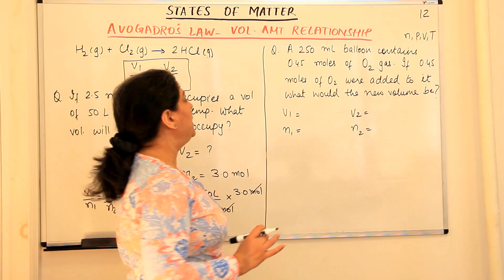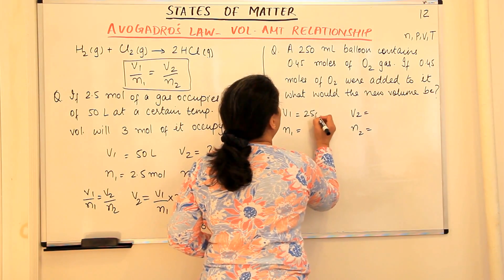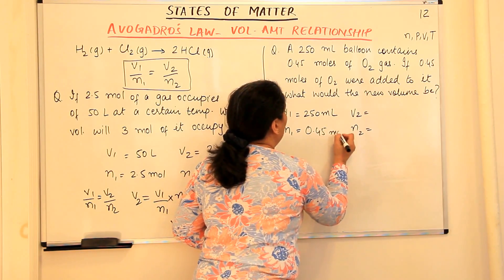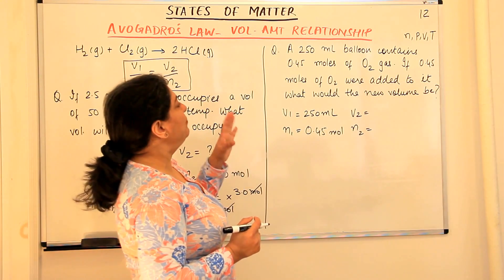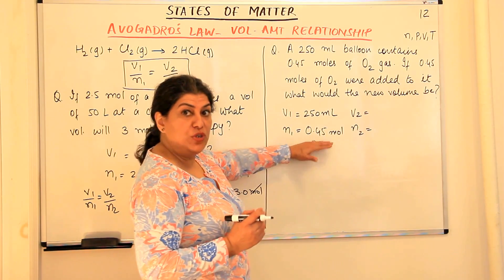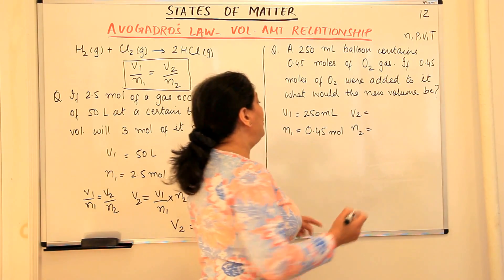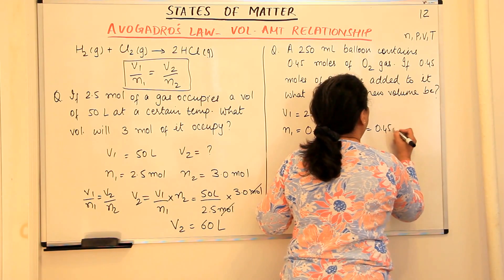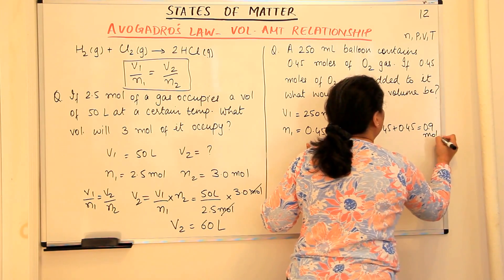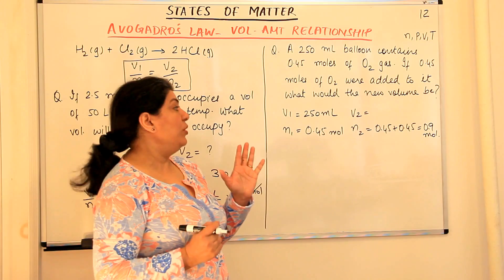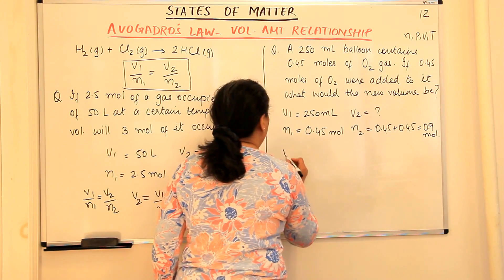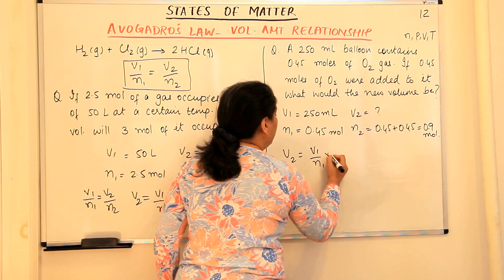V₁ = 250 ml, N₁ = 0.45 mol. If 0.45 moles were added, you originally had 0.45 mol and added another 0.45 mol, so N₂ = 0.45 + 0.45 = 0.90 mol. V₂ is what we need to find. Using the same relationship: V₂ = (V₁/N₁) × N₂.